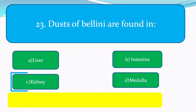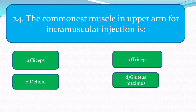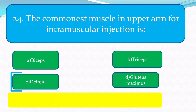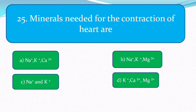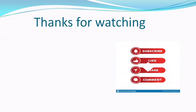Malpighian bodies are found in the kidney. The commonest muscle in the upper arm for intramuscular injection is the deltoid. The minerals needed for the contraction of the heart are sodium, potassium, and calcium. Thank you for watching. If you found this video helpful, please click the like button, share this video with your friends, and subscribe to our channel Lokseva Ayok Preparation for more interesting videos. All the best!